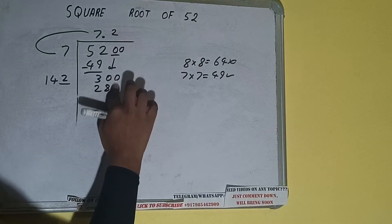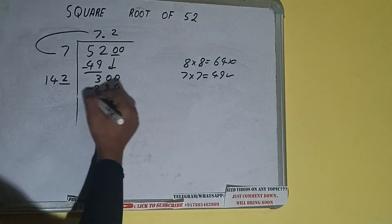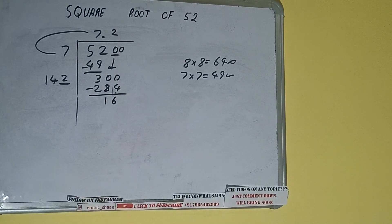2, 8, 2, sorry 2, 8, 4. That's 284, subtract, 16 will be left. Now 142 into 2 is 8, so add both. So 142 plus 2 will be 144 and 1 digit extra.